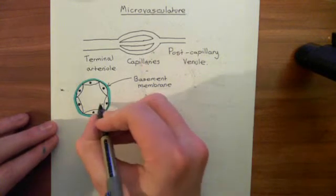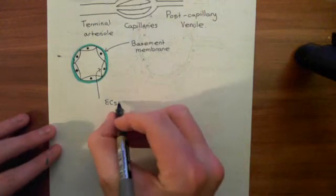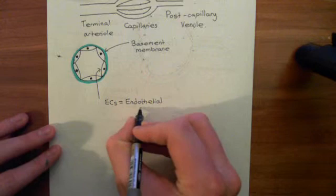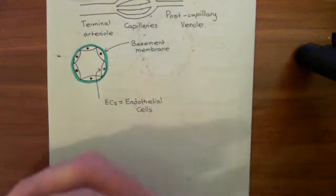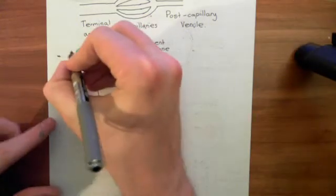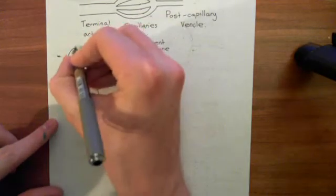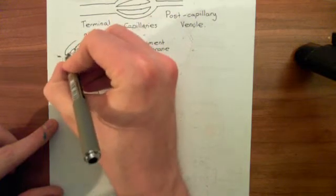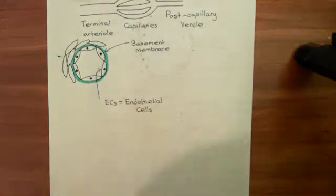So we have the endothelial cells — EC — sitting on the basement membrane. That's not the full structure of an arteriole yet; we're going to add another important layer. Surrounding the basement membrane, you then have a layer of smooth muscle cells. It might have multiple layers of smooth muscle cells. These smooth muscle cells surround the terminal arteriole completely, so that's the structure of an arteriole.